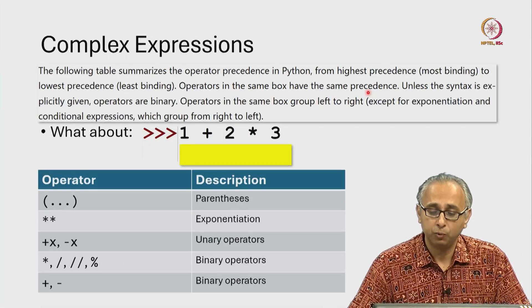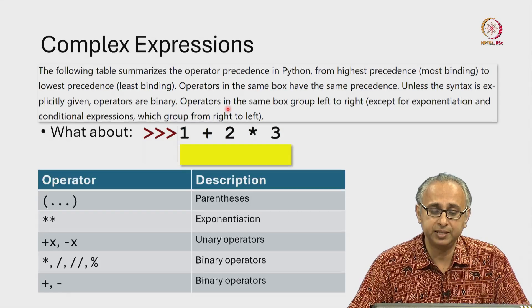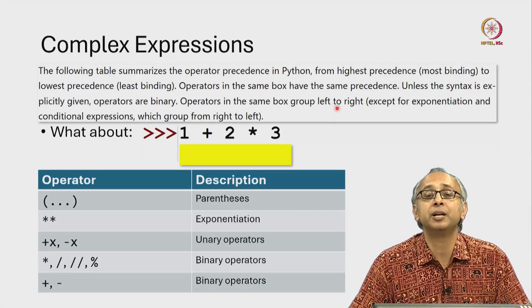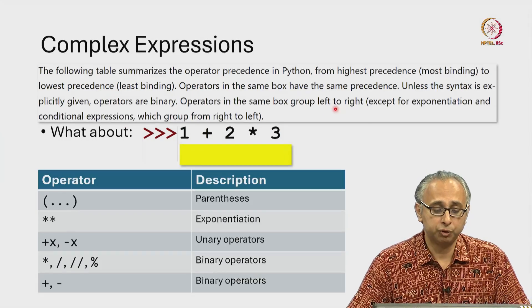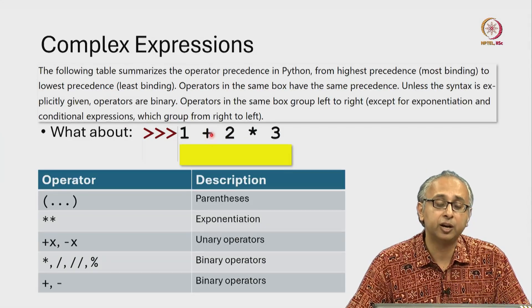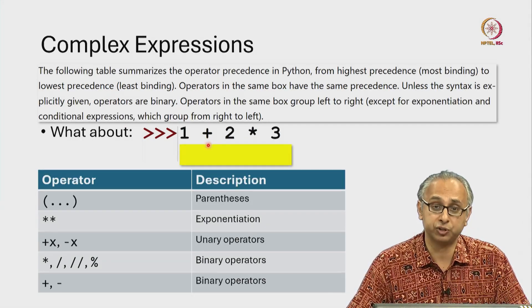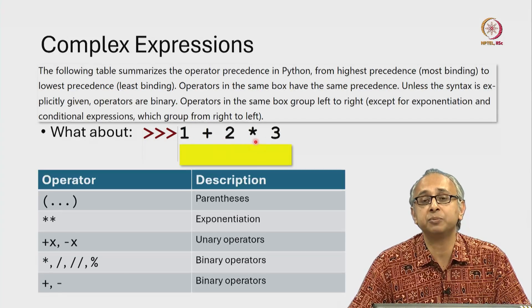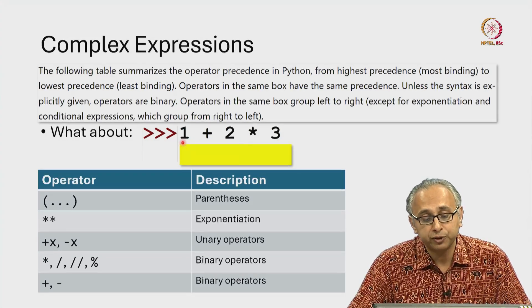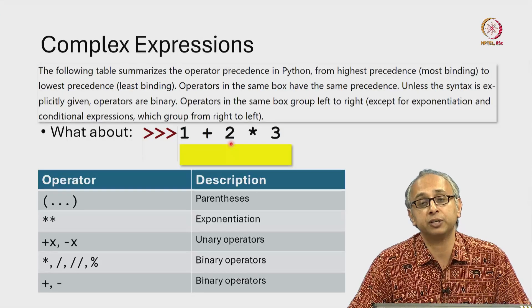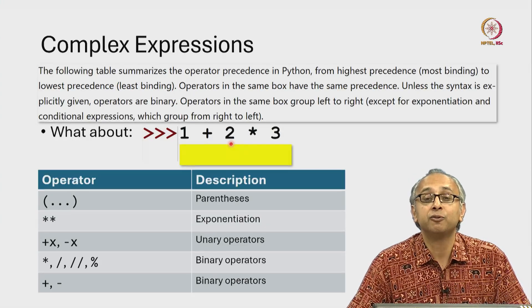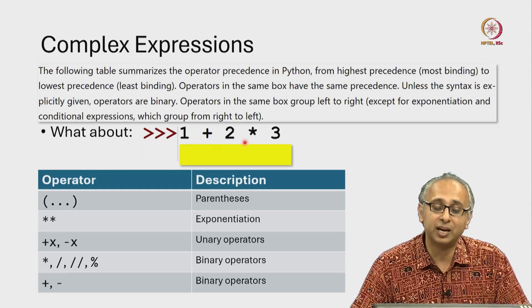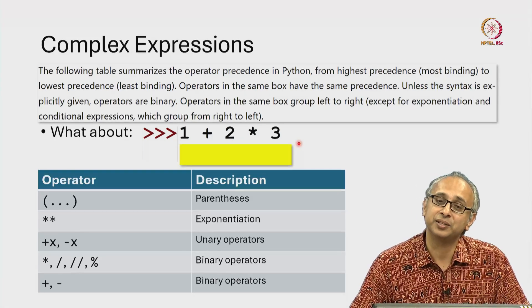Well, this sentence explains that. It says operators in the same box group left to right. So if this was let's say floor division then 1 floor division 2 times 3 would group as first doing 1 floor division 2. 1 floor division 2 is 0 and 0 times 3 is 0.